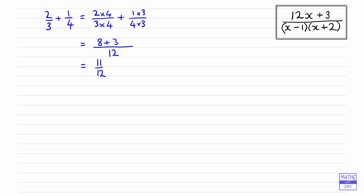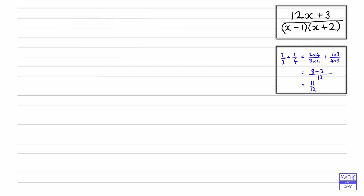The next thing we're going to look at is adding together two algebraic fractions, using the same kind of method. So let's move this to one side — now we're going to add together something a bit more interesting. We've got two over x plus five, and the other fraction, which we'll add to that, is one over x minus three.